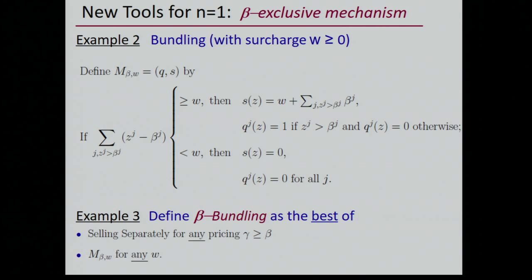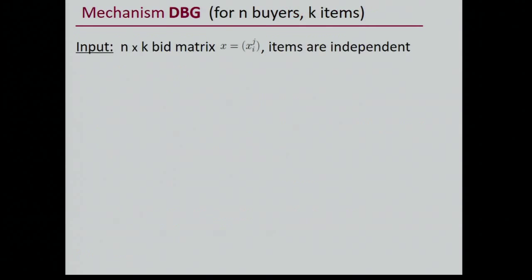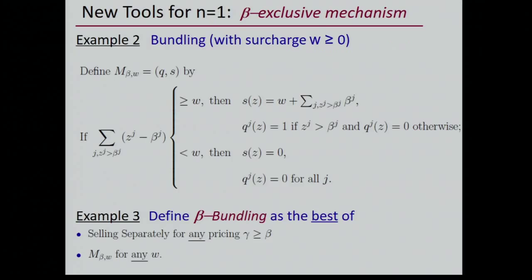You can see that what we are doing is extending the Bobaieff et al. result — the maximum of selling separately and bundling for the standard one-buyer K-item case — to the case with beta-exclusive mechanisms. Armed with that, it seems that if the maximum of selling separately and bundling is a constant factor approximation for the one-buyer K-item case, then the beta bundling we define would also be a good approximation of the best beta-exclusive mechanism.